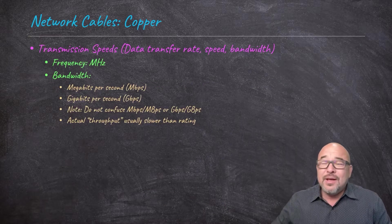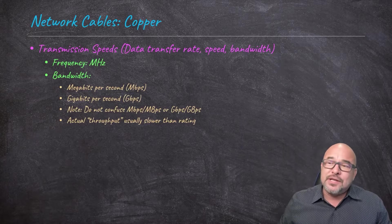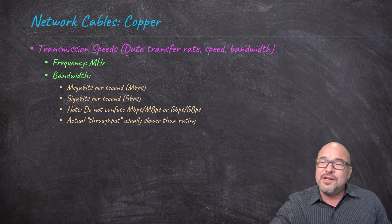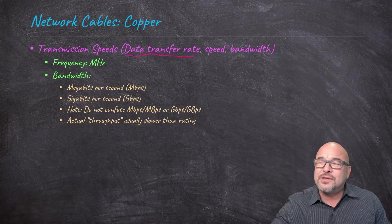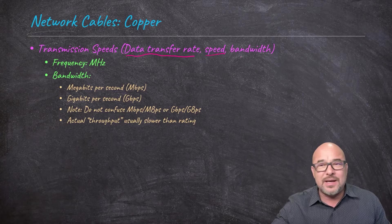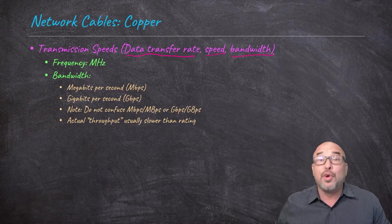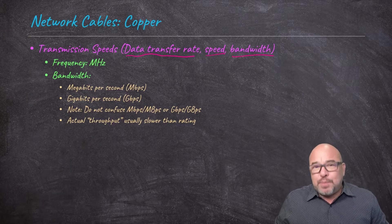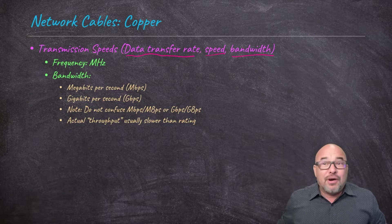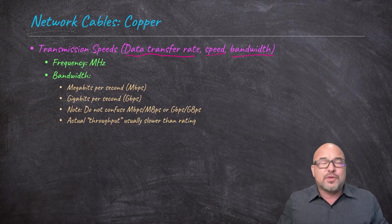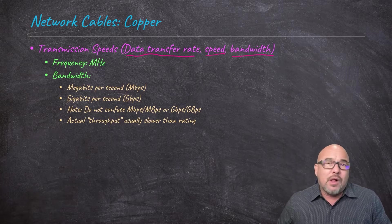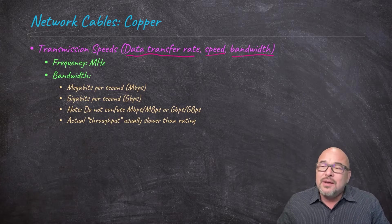We're going to start here with copper-based network cables. So starting here with copper, let's take a look at the transmission speeds. Now, one thing to understand is you'll hear this described in different ways: data transfer rate, speed, bandwidth, throughput. And if you want to split hairs, of which I have none, there are some differences, some subtle differences between those. But for our purposes, we'll all consider them synonymous.